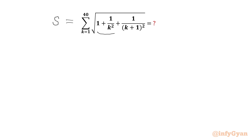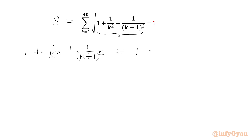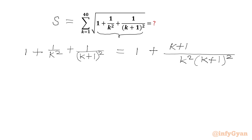Now we will simplify this radicand itself. So I will write here 1 plus 1 over k squared plus 1 over (k+1) whole square. This will be equal to 1 plus, we will take LCM here. So we can write k squared times (k+1) whole squared, and then we need to write in the numerator (k+1) whole squared plus k squared.